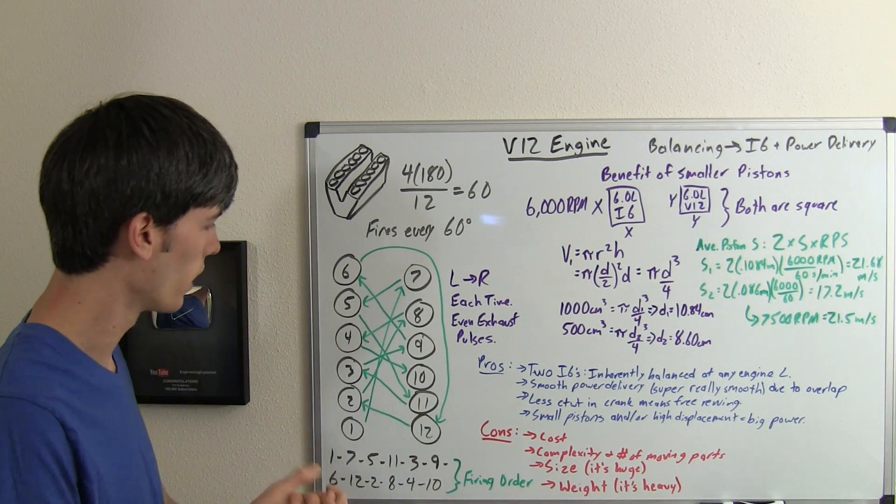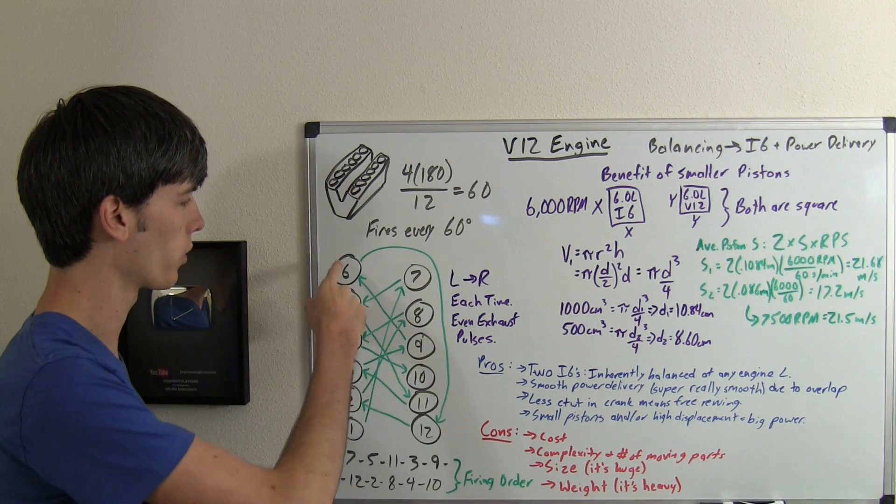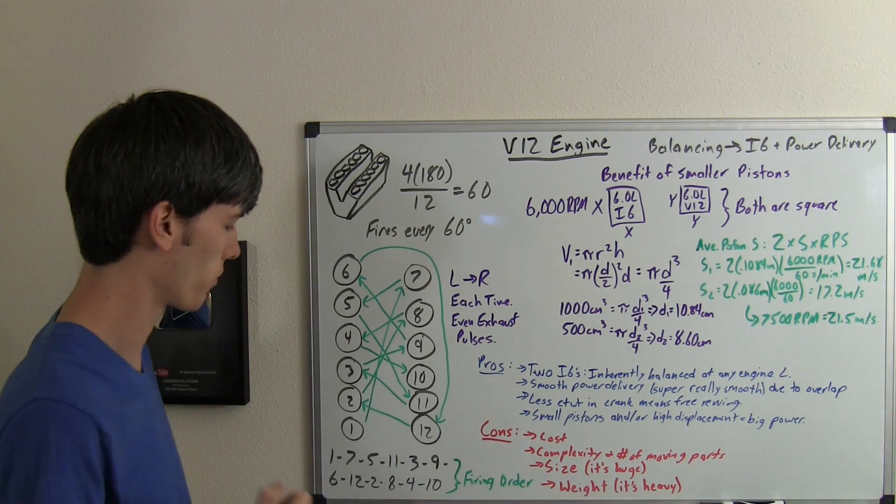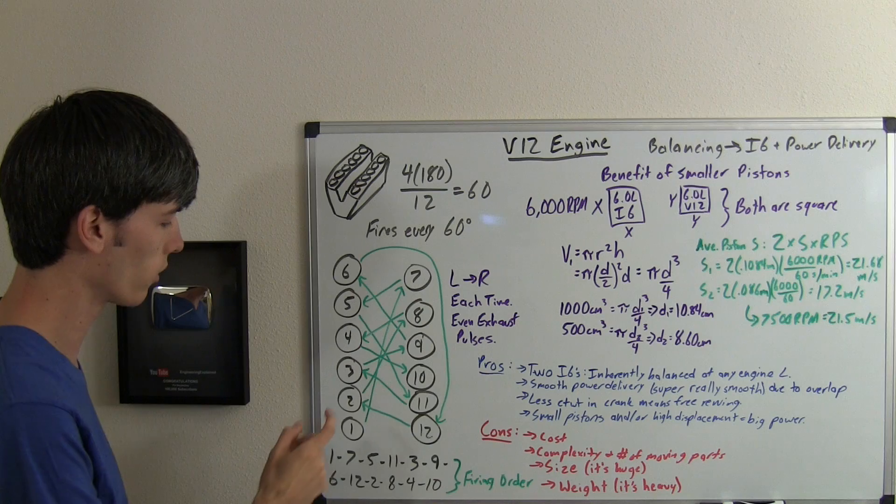This is from a Ferrari. They like to get a little clever with their numbering system. So they go 1 through 6 on the left, and then 7 through 12 down from the back towards the front.